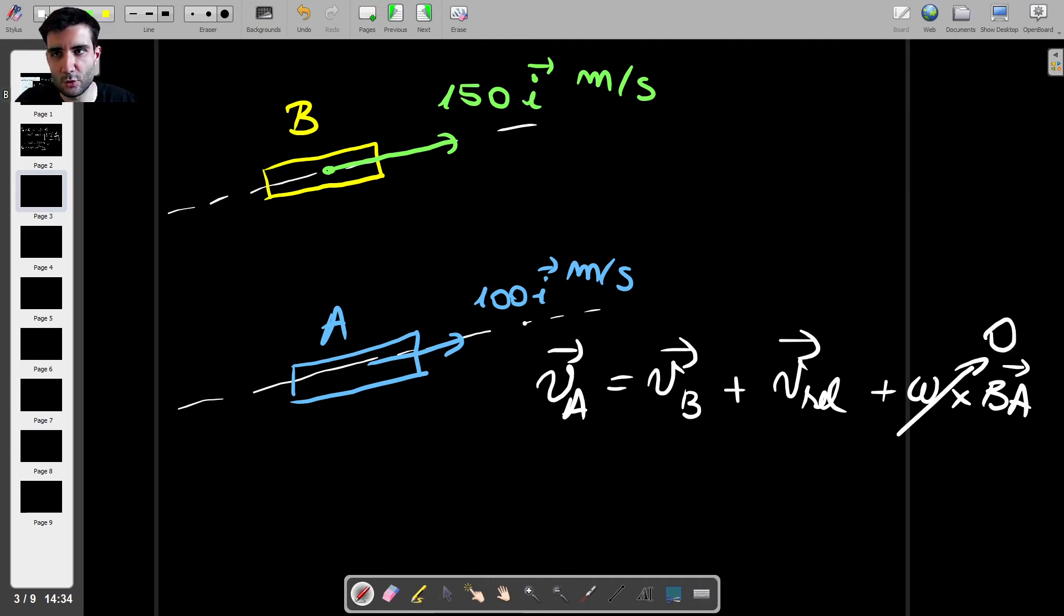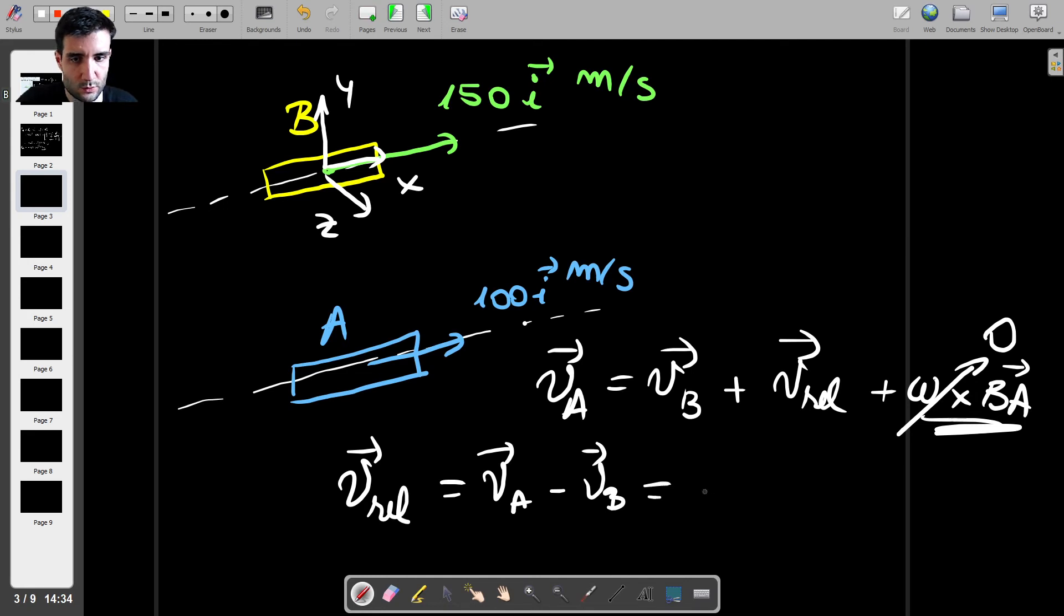Because the coordinate system that's attached to B, in this case, is no longer rotating. So this third term, on the right-hand side, just cancels out, which means that the relative velocity is VA minus VB, which is minus 50I, and that's meters per second.